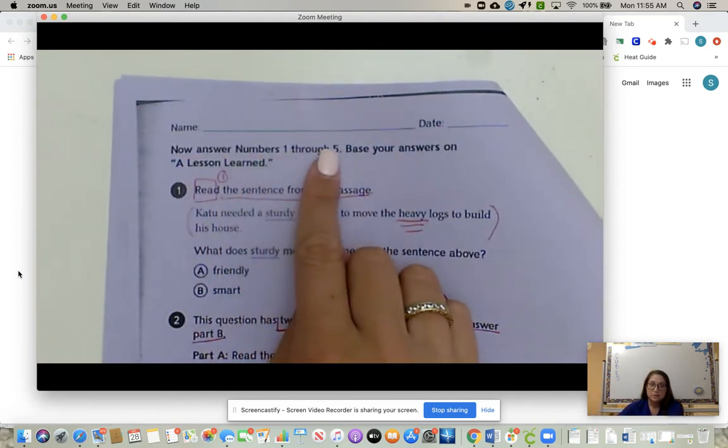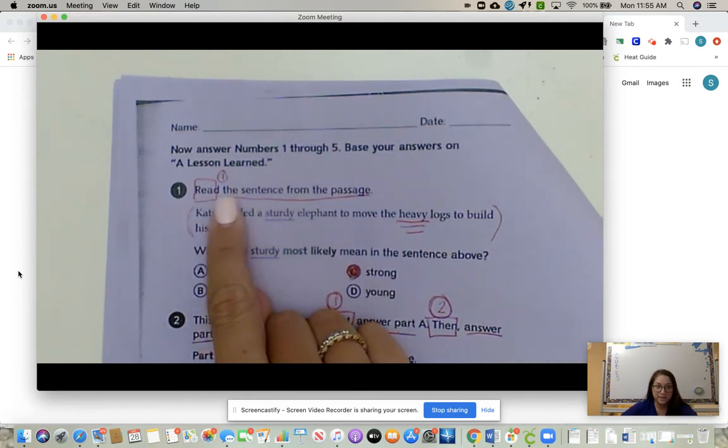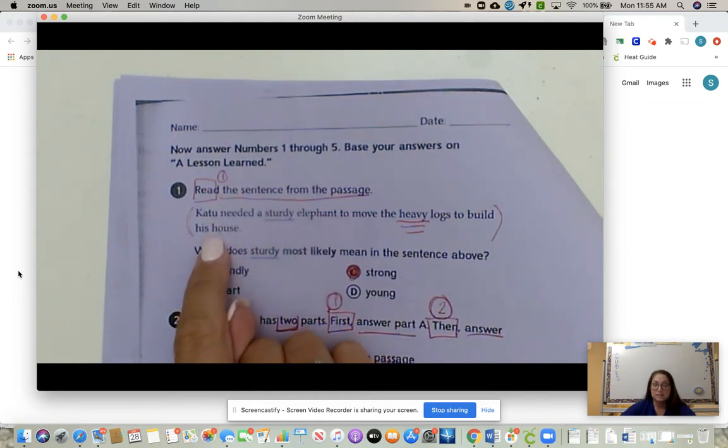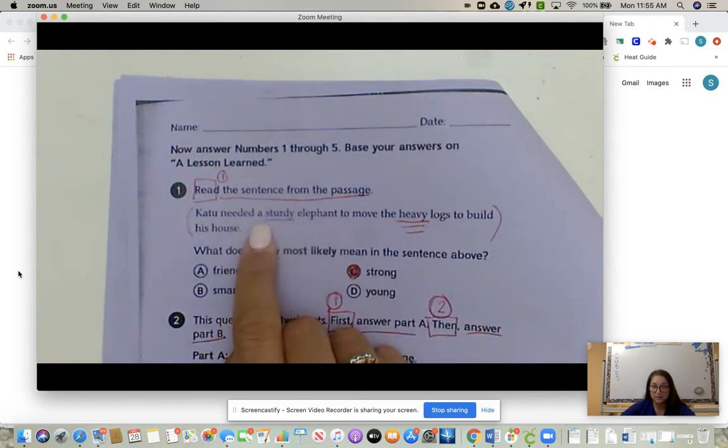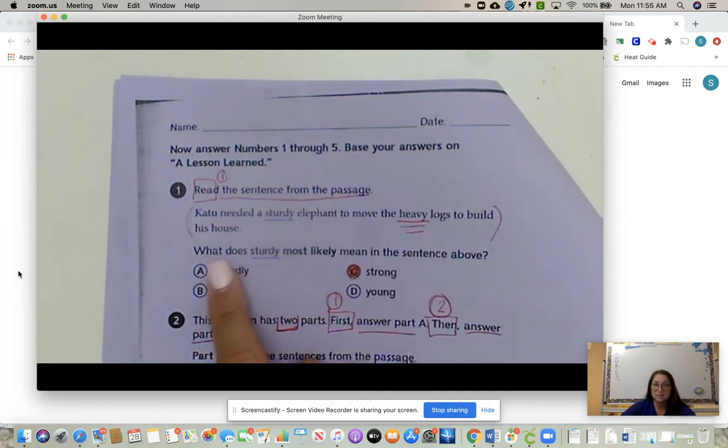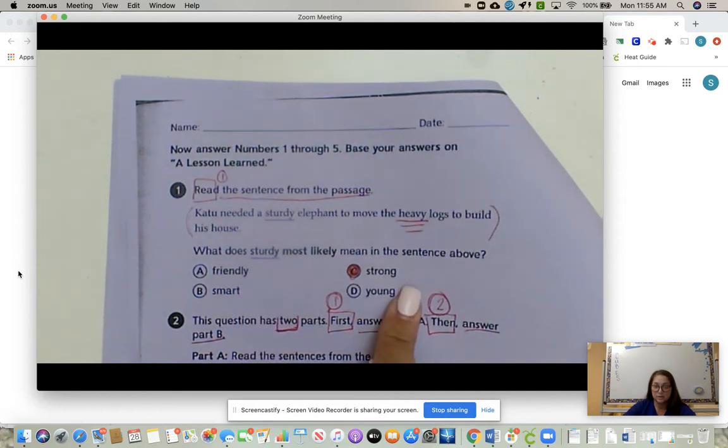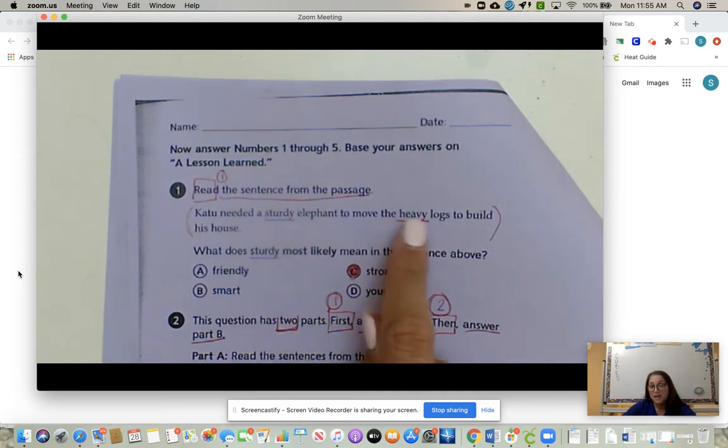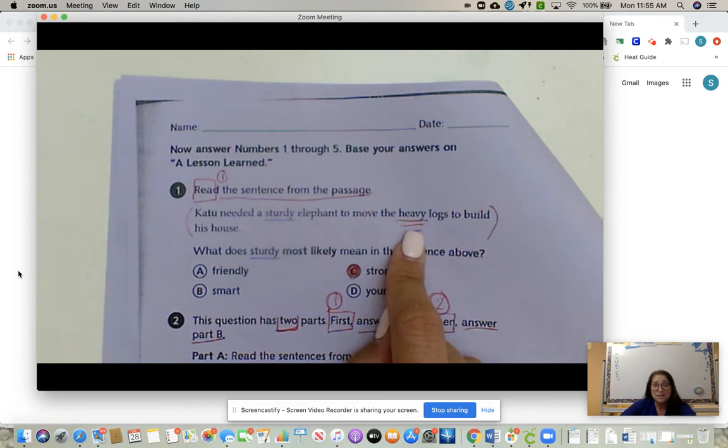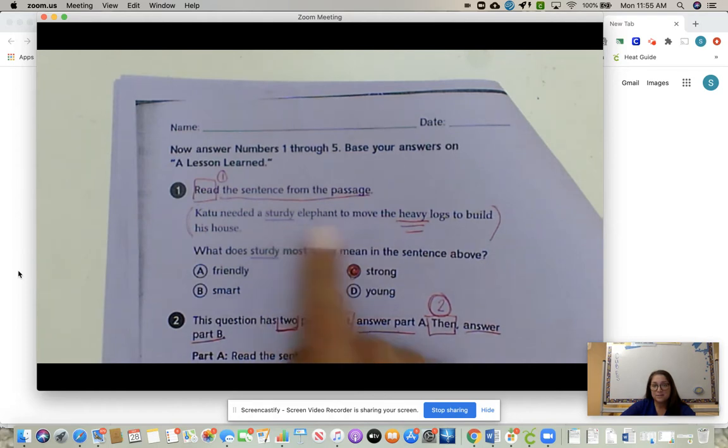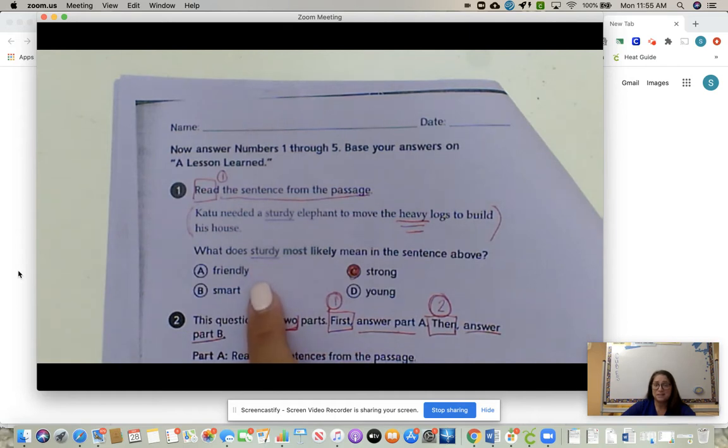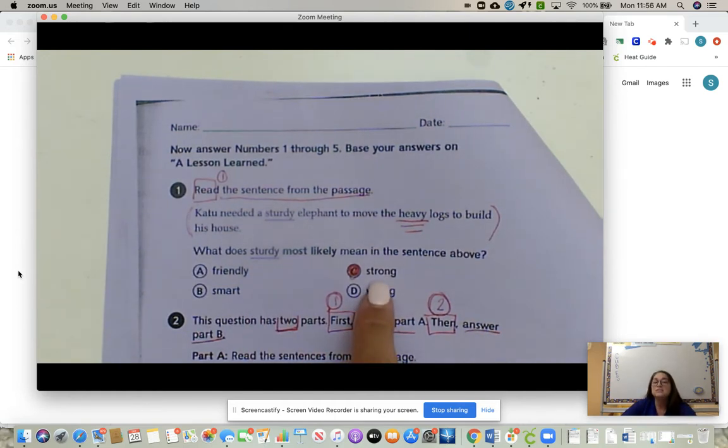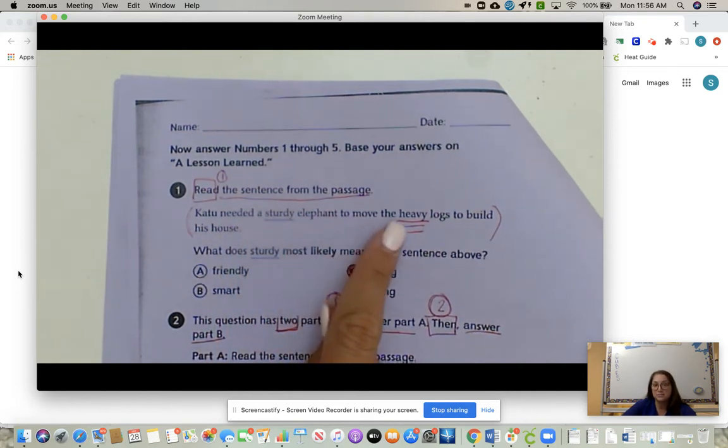Question number one: read the sentence from the passage. We boxed. The first thing we're going to do is read the sentence. This sentence was from a lesson learned. They just pulled it straight out and put it here. Cat two needed a sturdy elephant to move the heavy logs to build his house. What does sturdy most likely mean in the sentence above? Friendly, smart, strong, or young? The student said strong. Well, what would help them understand or think that sturdy meant strong? Well, heavy. You need to think in your mind or talk out loud. Hmm, I know an elephant's really big. I don't know what sturdy means, but he needs to move heavy logs. So he doesn't need a friendly elephant to do that. He doesn't need a smart elephant to do that. He doesn't need a young elephant to do that. He needs a strong elephant to move heavy logs. So cat two needed a strong elephant to move the heavy logs to build his house.